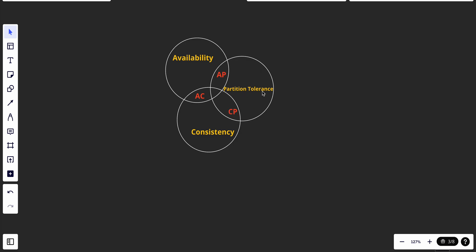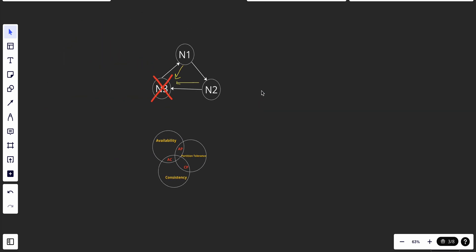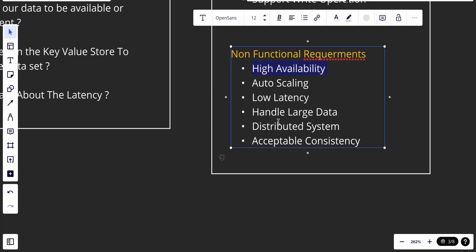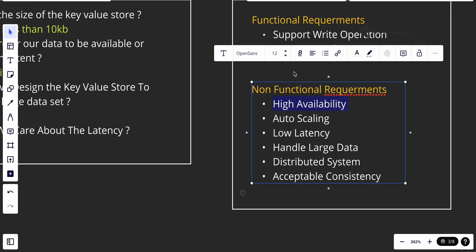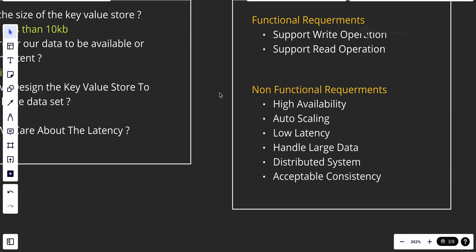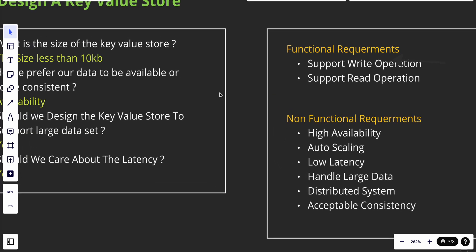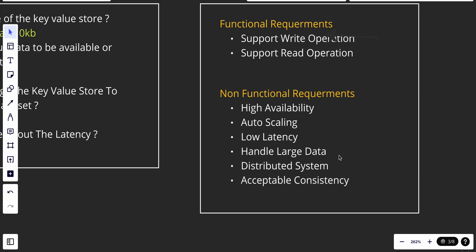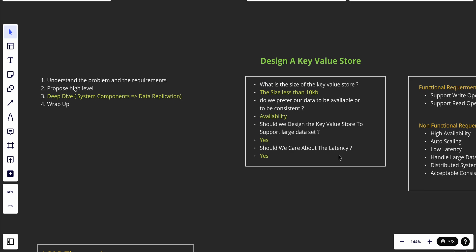For this key-value store, we are going with the AP system because our requirements call for high availability and tunable — or acceptable — consistency. From the functional and non-functional requirements we know which type of system to design. Some databases will be CP — for example, a banking system requires strong consistency over high availability. There is no one design that fits all; each design will be unique to the specific interview. What we're building here is a framework to know how to be successful in system design interviews.